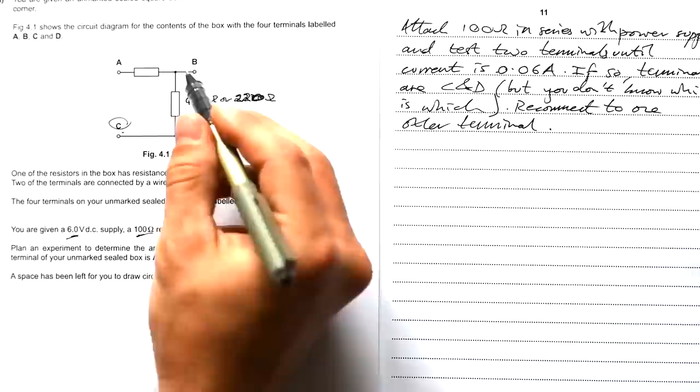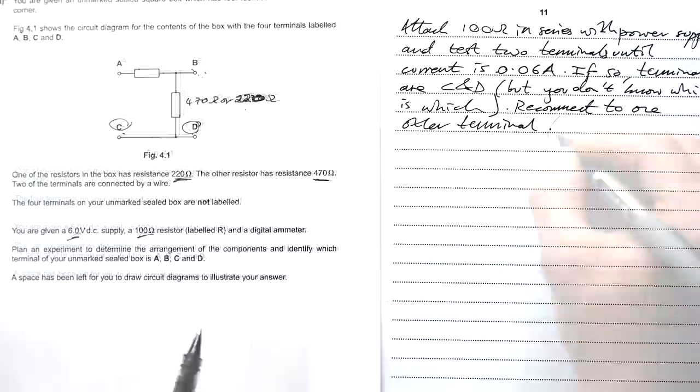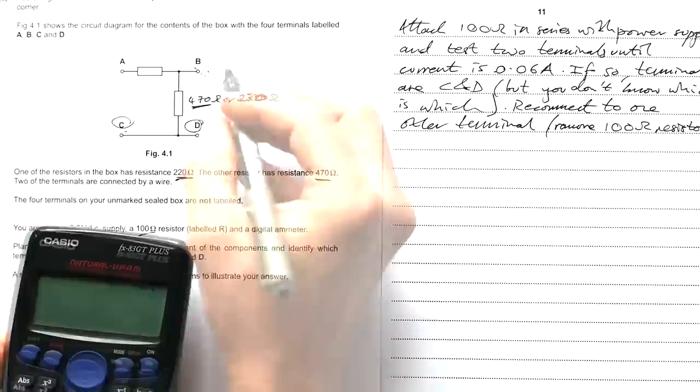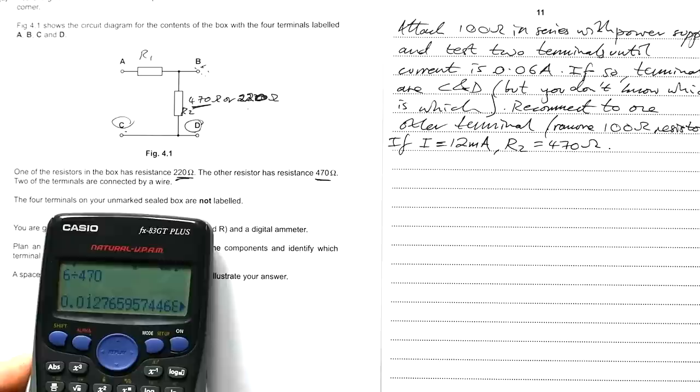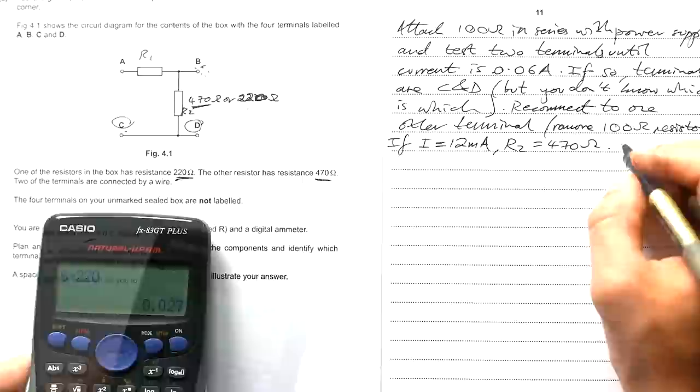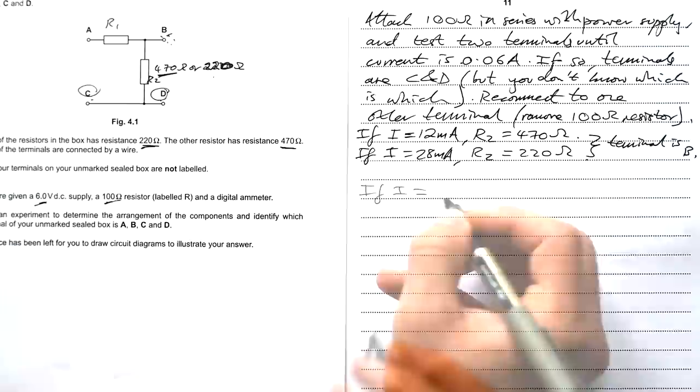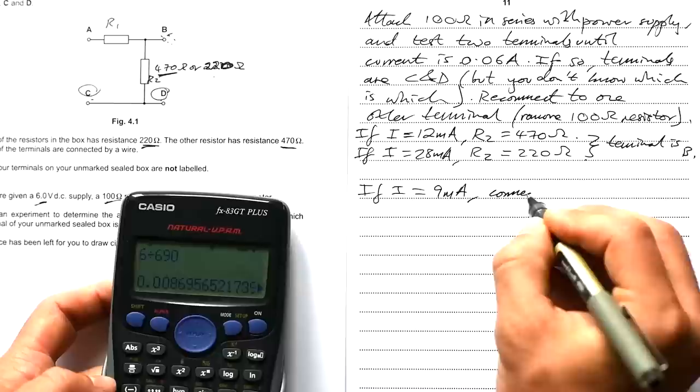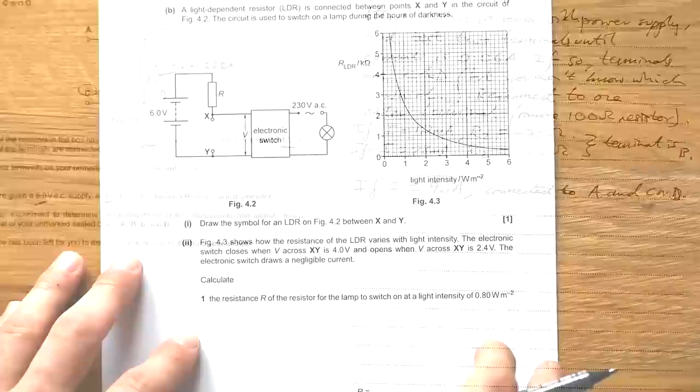Reconnect to one other terminal. Now, what are the two options? Well, we have 470 ohms here or we have 220 ohms here. So let's say that we attach B and C then. Now, whichever one you're connected to here, if you then connect to B, you're going to end up with a resistance of just 470 or 220. Let's remove the 100 ohm resistor. So let's say that we have 470 ohms here. So if we attach to B then, then we're looking for a current of 12 milliamps. If I equals 12 milliamps, let's call these R1, R2. R2 is equal to 470 ohms. However, if it's 220, it's going to be equals to 28 milliamps. Terminal is B. What's the overall resistance? Going to be 690. So if you have a resistance of 690, then we're going to have 9 milliamps. If the current is 9 milliamps connected to A and C or D.